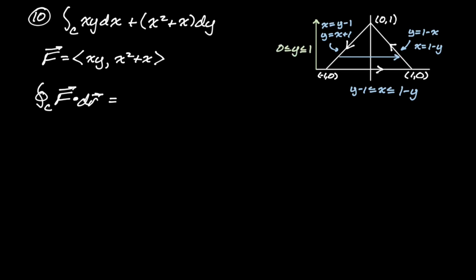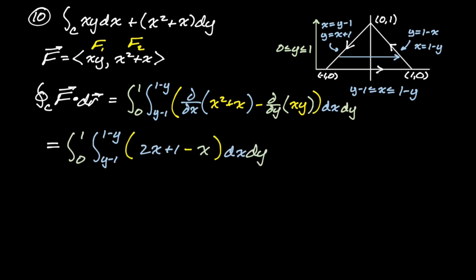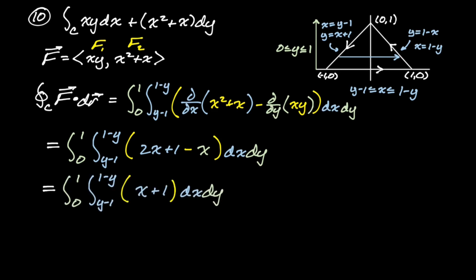We have F1 = xy and F2 = x² + x. The integrand is partial x of (x² + x) minus partial y of (xy), which is (2x + 1) − x = x + 1. That's a nice clean integrand. Integrating (x + 1) with respect to x: treating it as (x + 1) and using the reverse power rule gives (1/2)(x + 1)², then we evaluate from x = y − 1 to x = 1 − y.